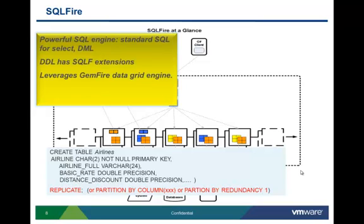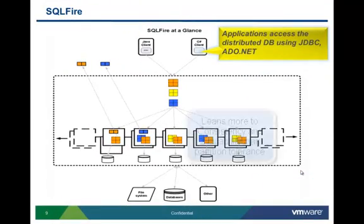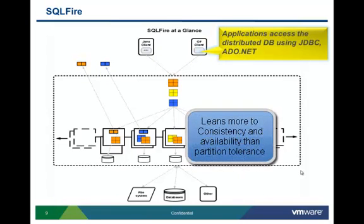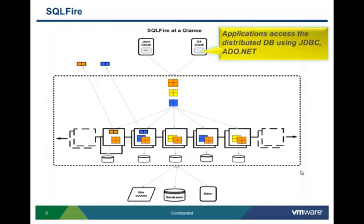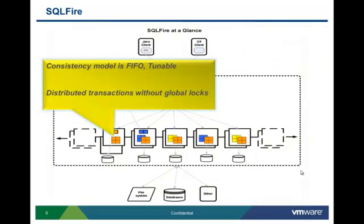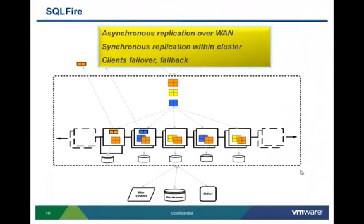The product leverages the Gemfire distributed data grid for distributed data distribution and membership management. On the consistency model, if you're familiar with the CAP theorem, SQL Fire leans more towards consistency and availability than partition tolerance within a single cluster. The product supports async replication across wide area networks so that even if the entire cluster goes down, you can fail over or fail back. We use a fail-fast eager validation algorithm for distributed transactions, and a single phase commit algorithm so that we forgo expensive distributed logs.